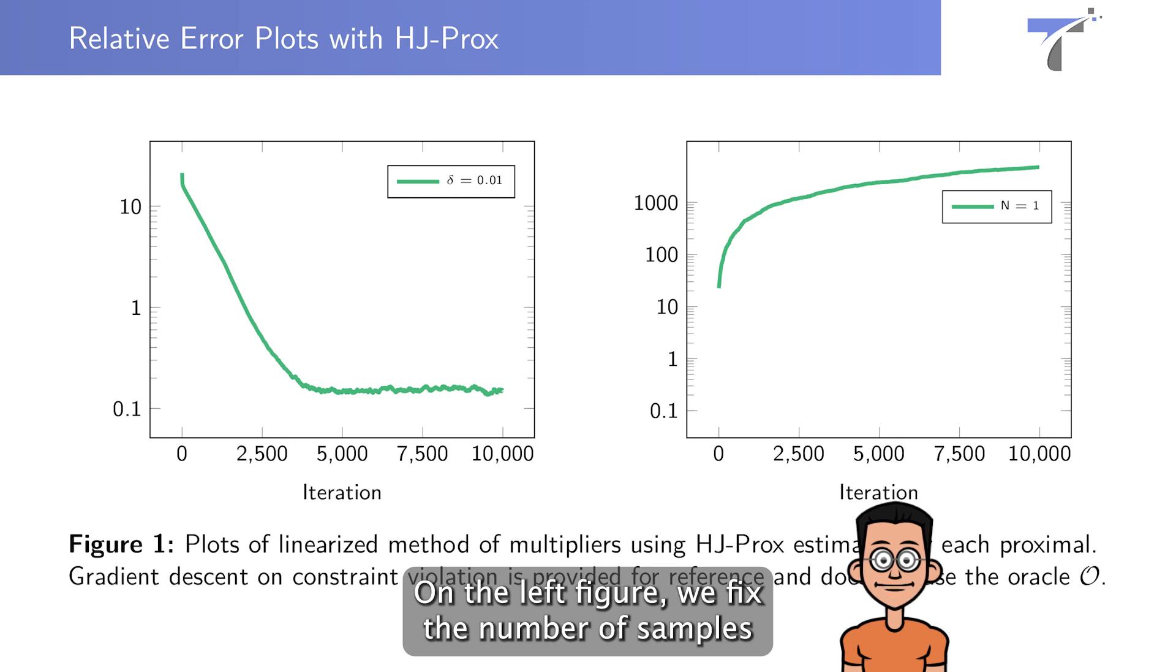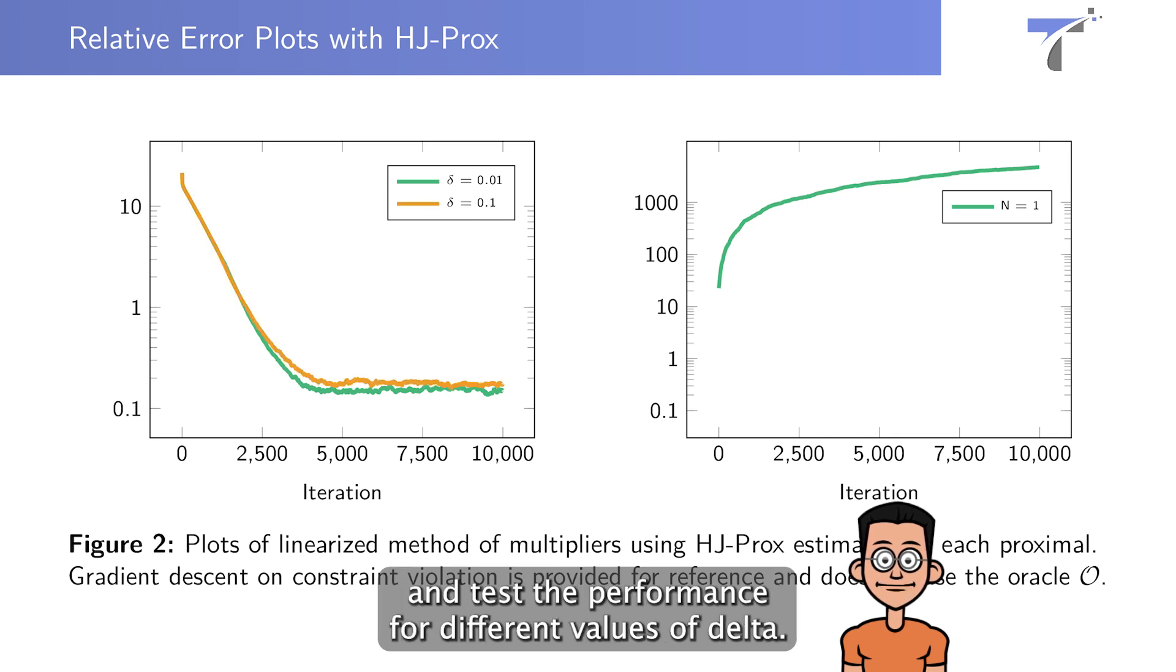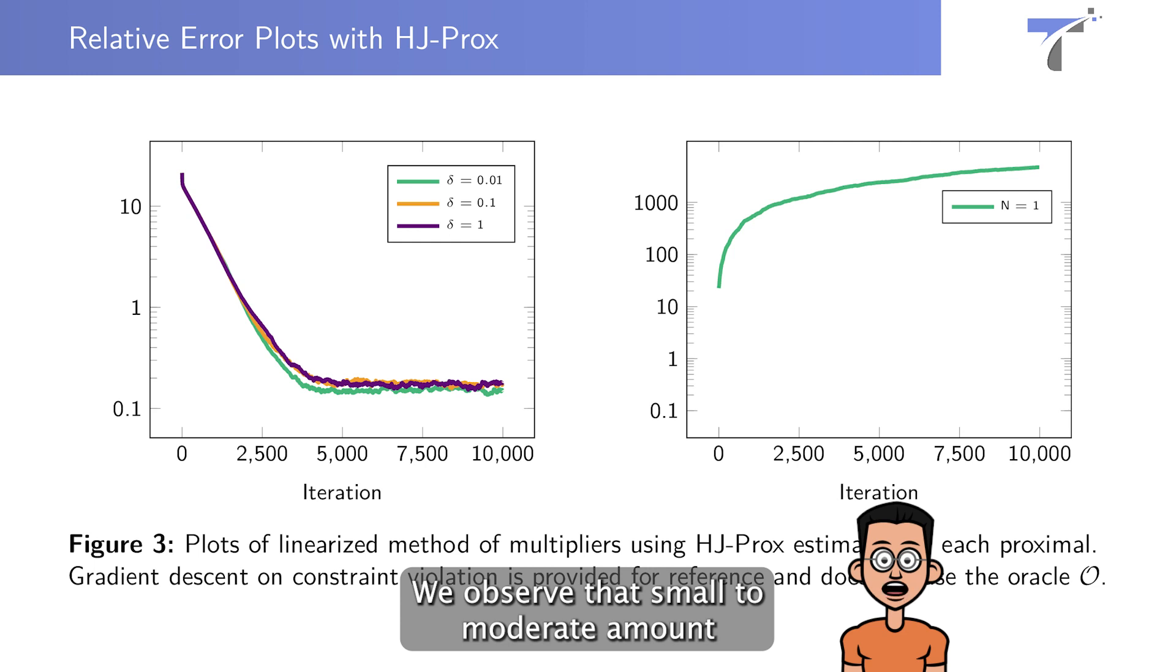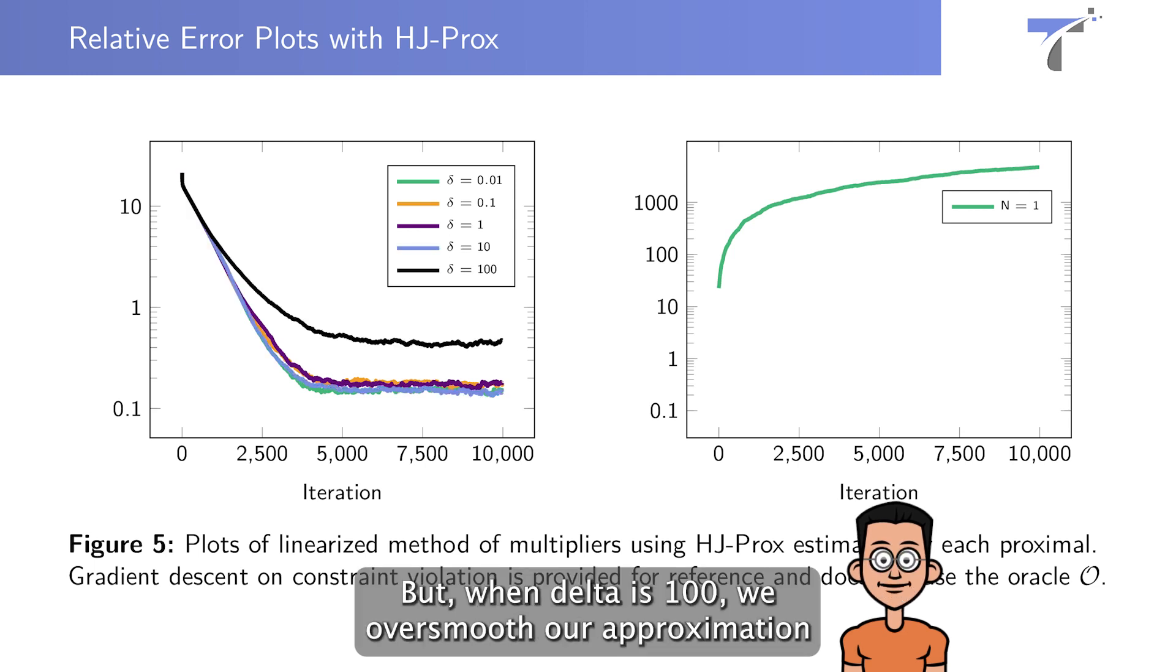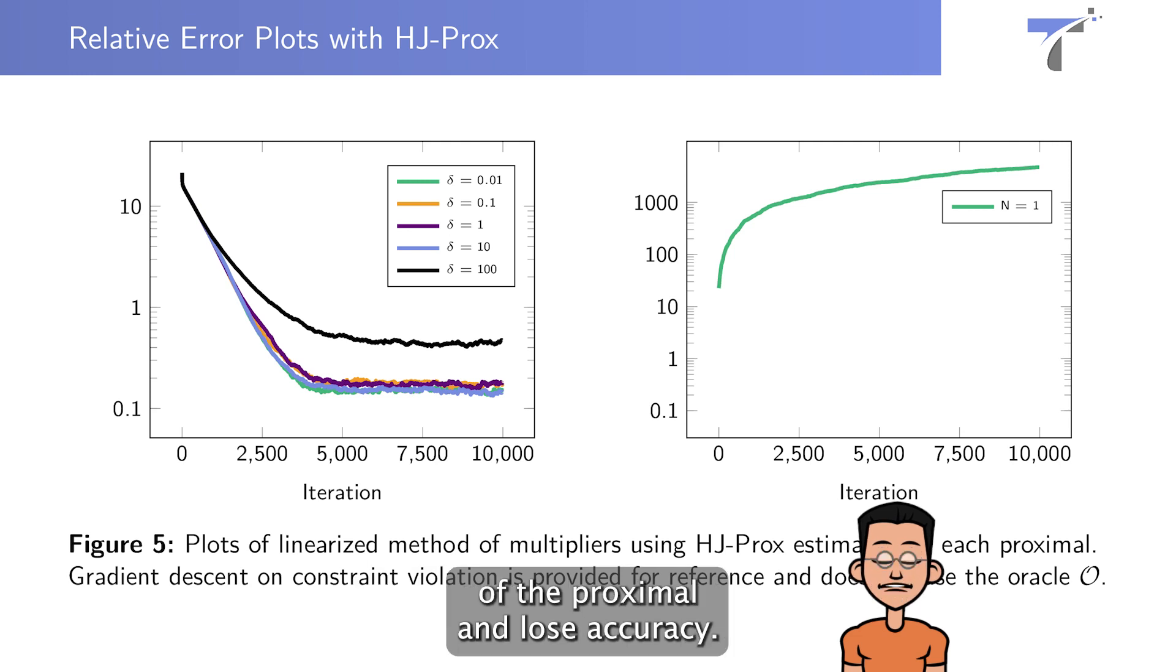On the left figure, we fix the number of samples and test the performance for different values of delta. We observe that small to moderate amount of smoothing performs well, but when delta is 100, we over-smooth our approximation of the proximal and lose accuracy.